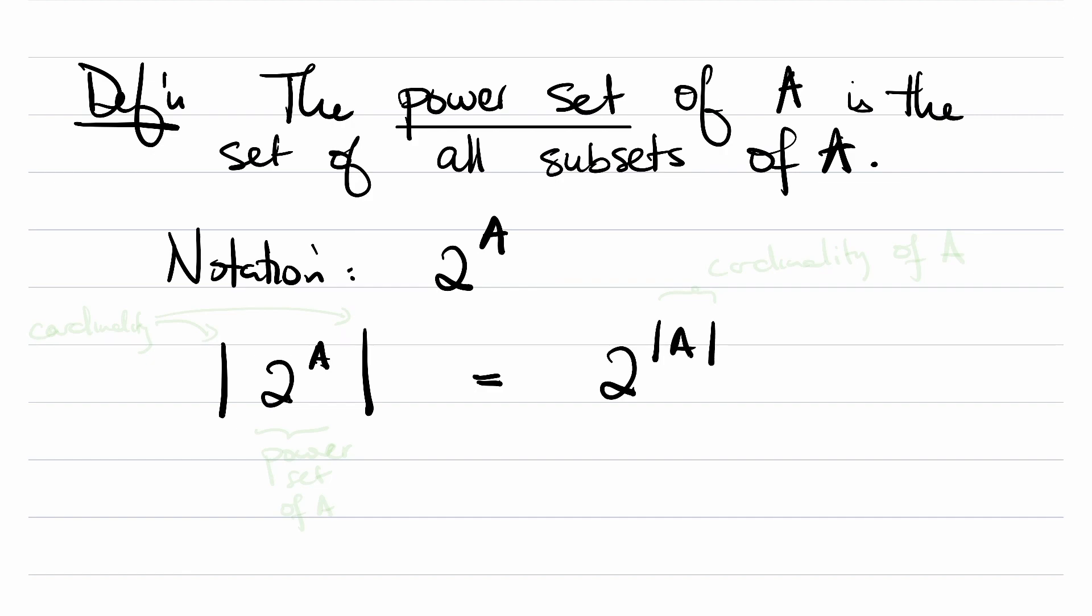So just to remind you, this guy is the power set of A. These two absolute values just means the cardinality. And then this is the cardinality of A. So this is a symbolic way to write down the theorem that we just learned.